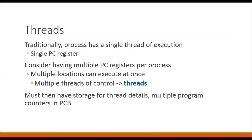Traditionally, a process will have a single thread of execution. This means there will be a single flow of execution within the program. Your process will be assigned a single program counter register that will point to the next instruction in your program that will be executed by the processor. There will be only one flow of execution in your program.